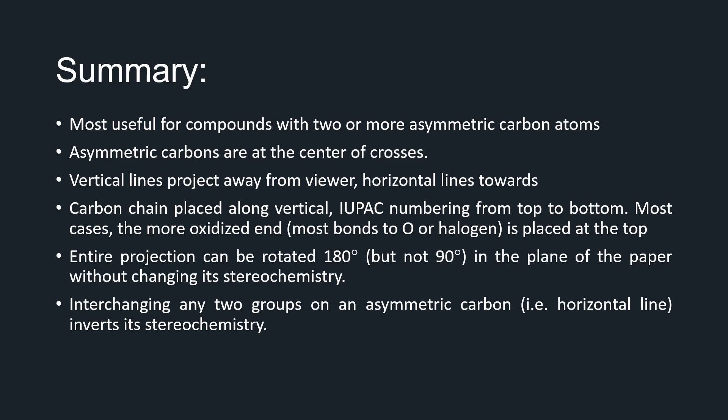So in summary, Fischer projections are pretty useful. They're really useful for naming compounds with two or more asymmetric carbon atoms. You'll always find asymmetric carbons at the center of crosses. Remember that vertical lines project away from the viewer, and horizontal lines towards, which is how we get the bowtie name. The carbon chain is always placed along the vertical, with the IUPAC numbering going from top to bottom. Make sure that your lowest numbered carbon is the most oxidized end, and make sure it's placed at the top. Remember that the entire projection can be rotated 180 degrees in the plane of the paper without ever changing its stereochemistry. But you can't rotate it 90 degrees. And if you want to find the mirror image, you interchange the two groups on the asymmetric carbon horizontally. That inverts its stereochemistry and lets you find mirror images.